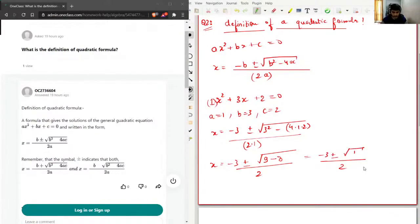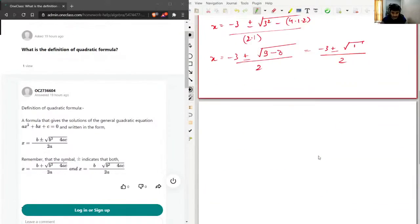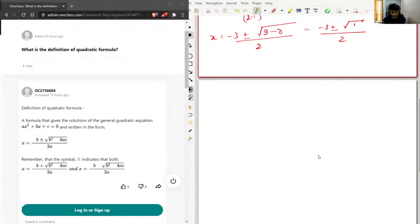And yeah, square root of 1 is nothing but 1 itself. So I can write like this: this will be x equal to minus 3 plus minus 1 over 2. Now I'll just write this as x1. So first we'll consider the plus sign. So this will become minus 3 plus 1 over 2 and that will be minus 2 over 2, negative 1.